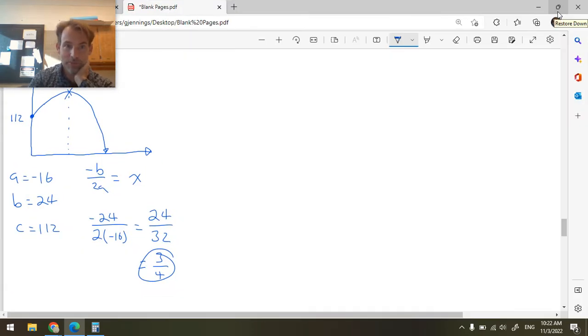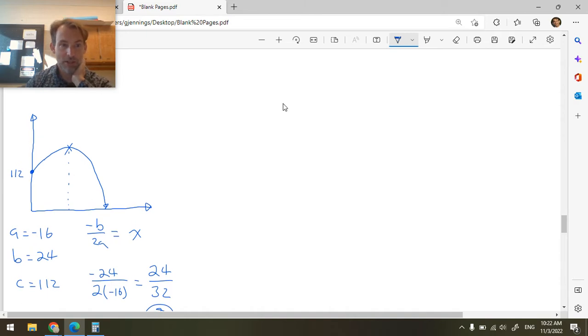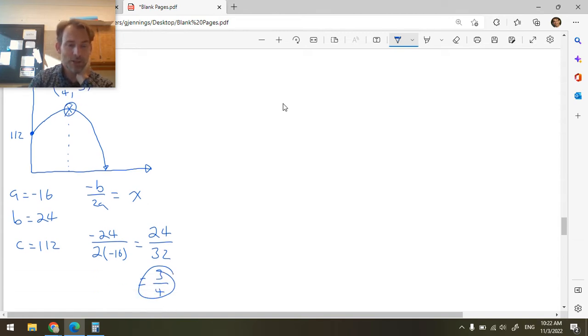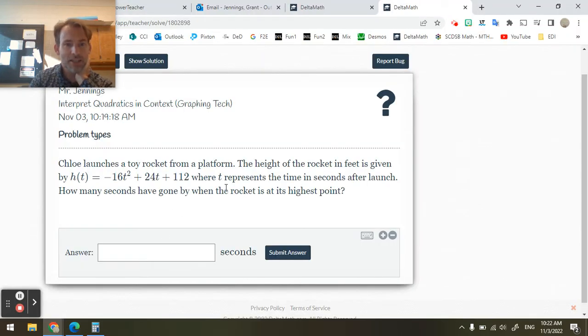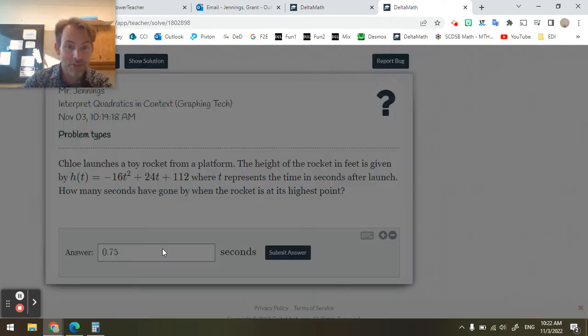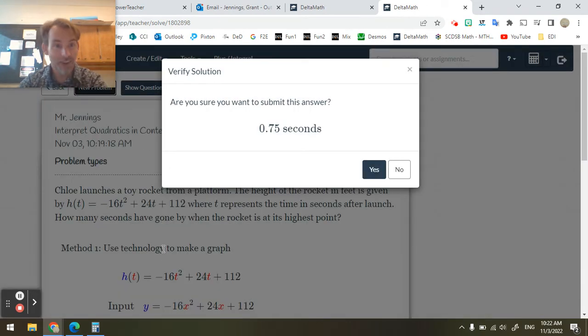Okay. So now what do I know? Well, lots of stuff. I know lots of stuff. So this is 3/4, and then some y value. That's the value of the vertex. And I want to know, wait a minute, I think I already have the answer to the question. How many seconds have gone by when the rocket is at its highest point? I don't need to find how high it is. I just need to know how many seconds. So that's 0.75 seconds. That's 3/4 seconds. Hooray!